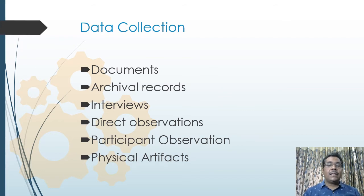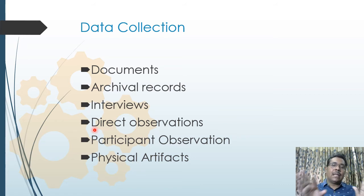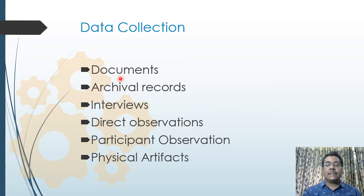Data collection is an important part of case study research and can include documents, archival records, interviews with individuals or groups, direct observation as a dispassionate observer, participant observation, physical artifacts, audio visual material, or any other material relevant to the case. It's not just interviews or published documents — there are at least six different kinds of data that need to be studied in case study research.